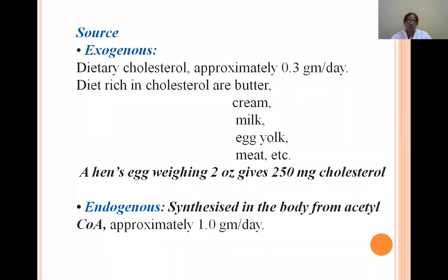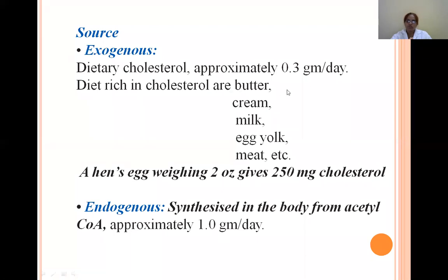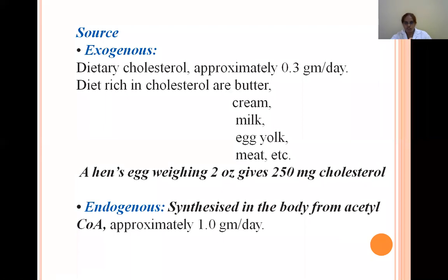The sources of cholesterol are exogenous and endogenous. Exogenously, cholesterol is obtained from the diet — approximately 0.3 grams per day. Dietary sources rich in cholesterol include butter, cream, milk, egg yolk, and meat. Eggs provide about 250 milligrams of cholesterol. Endogenously, cholesterol is synthesized in the body from acetyl-CoA, which is the main precursor — approximately 1 gram per day.